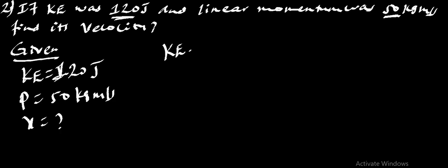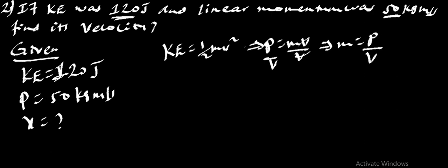So, we have given kinetic energy, which is equal to 120 joules and momentum P is equal to 50 kg m per second. From kinetic energy, we have 1 over 2 mv squared. Now, we don't have mass. Therefore, from momentum, P is equal to mv. So, m means over V, we will get mass, which is mass is P over V.